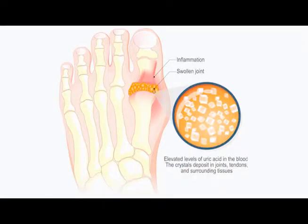Pseudogout, much like gout as it is named after, is a condition that's an inflammatory state within the joint. You get an inflammatory response that is much like gout, but gout is based off of uric acid crystals, which is a byproduct of metabolites and protein breakdown that the kidney can't secrete.